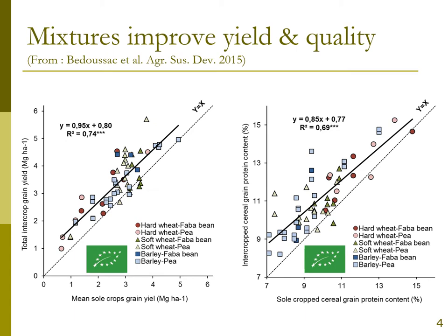We also know that intercropping is a way to reduce weeds compared to sole crops, as legumes are not very competitive crops. We also know that in most cases intercrops can reduce some diseases or pests, but not all pests and not all diseases.